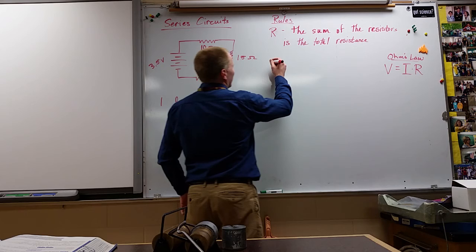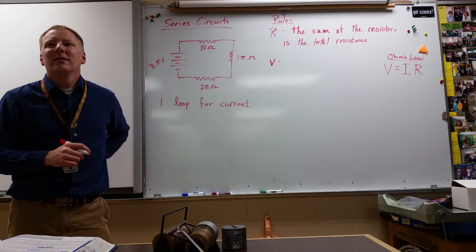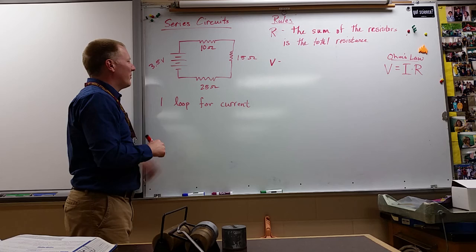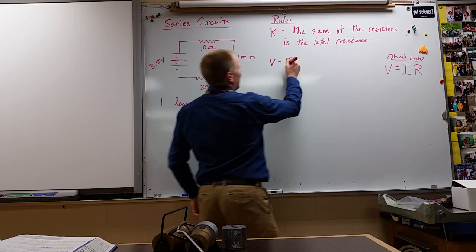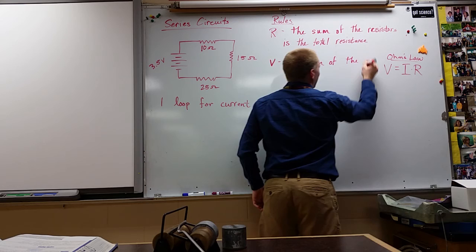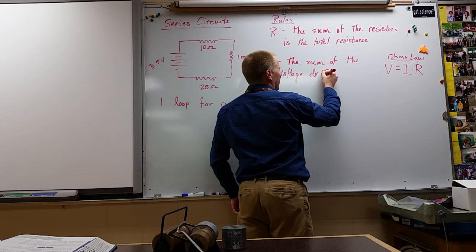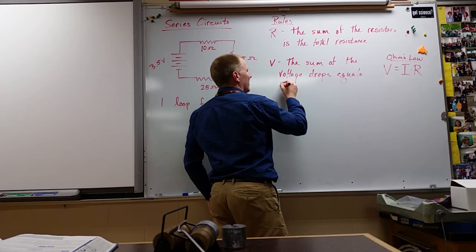Now, Kimmy, what was the rule that we learned about voltage? The total resistor voltage will always equal the battery voltage. If you add up the voltages that are dropped on each of these, they'll add up to the battery voltage. So the sum of the voltage drops, we call them, equals the battery voltage.